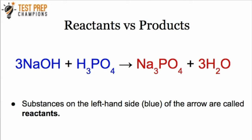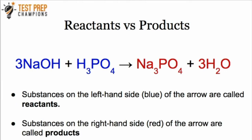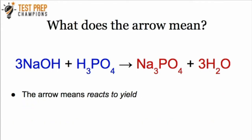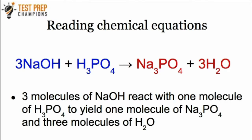You need to know the difference between reactants and products. The substances on the left-hand side of the arrow — shown in blue, that's the 3NaOH and H3PO4 — are called reactants. Everything on the right-hand side of that arrow, shown in red, are called products. The arrow means 'reacts to yield,' or simply 'yields.' So I would read this as: three molecules of NaOH react with one molecule of H3PO4 to yield one molecule of Na3PO4 and three molecules of H2O.